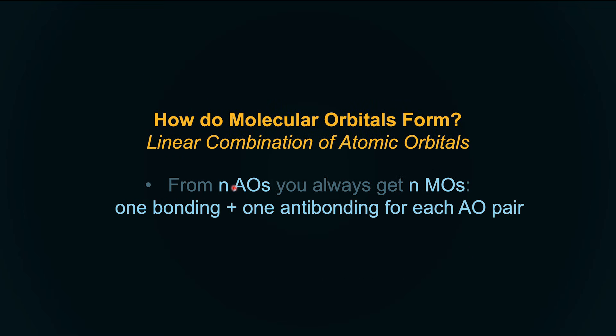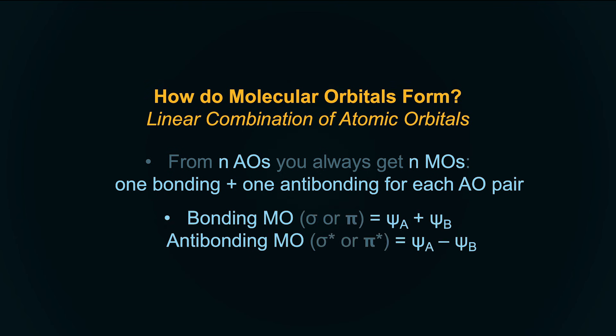Notice: we had two atoms with two S orbitals and we got one bonding and one anti-bonding from them. From N atomic orbitals, you get N molecular orbitals. Bonding is ψA + ψB; anti-bonding is ψA − ψB. In the simulation we flipped one and added — that was the same logic.